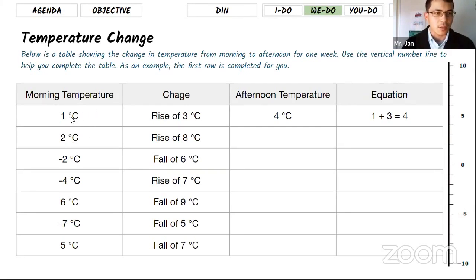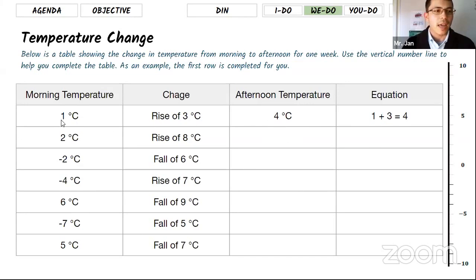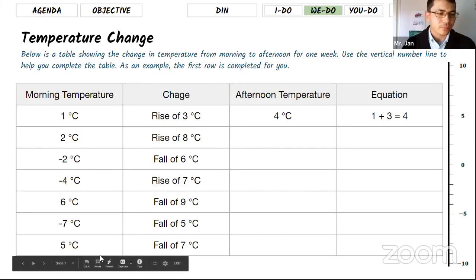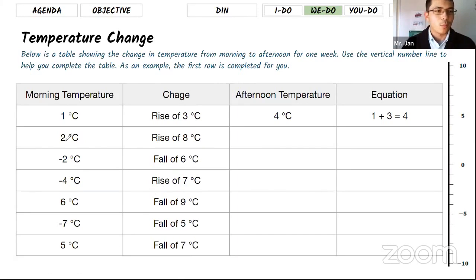The first row is shown as an example: morning temperature is 1 degree Celsius, the change is a rise of 3 degrees, so the afternoon temperature is 4 degrees. You find it by adding morning temperature plus change. For the next row, morning was 2 degrees and it went up by 8, which makes the afternoon temperature 10. The equation is: 2 plus 8 equals 10.